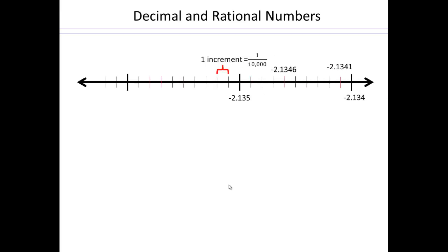So that means we can plot our decimal and rational numbers on number line now. If I say that the increment is 1 over 10,000, and I end up with this tick mark to be negative 2.135, then 10,000th later, which is right there, will be negative 2.134. Because this is tenths, hundredths, thousandths. So if this is thousandths, then the next little tick mark is going to be ten thousandths.